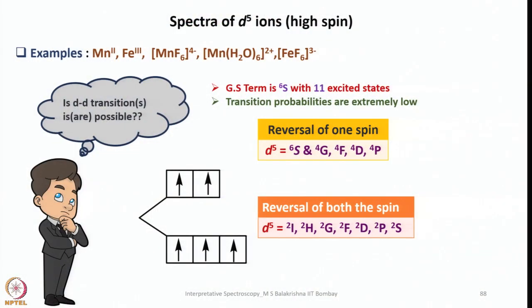Now we will consider another unique electronic configuration d5. Spectra of d5 ions, high spin. We have quite a few examples: manganese 2+ complexes and iron 3+ complexes are d5 systems. For example, hexafluoromanganate 4-, hexaquamanganese 2+, or hexafluoroferrate 3- all are having d5 electronic configuration and high spin complexes.